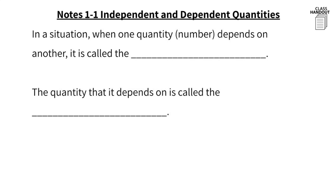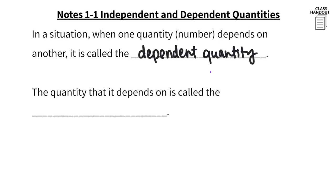This lesson is on independent and dependent quantities. In a situation when one quantity or number depends on another, it is called the dependent quantity. The quantity that it depends on is called the independent quantity.